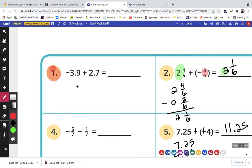So if I have negative 3.9 plus 2.7, I'm going to find the difference between 3.9 and 2.7. Now, because one is positive and one is negative, I find the difference. And the difference is 1.2. There's more negative, so it's negative 1.2.